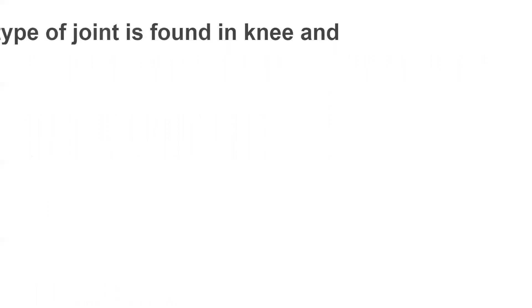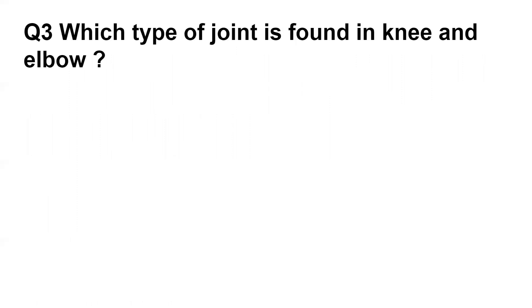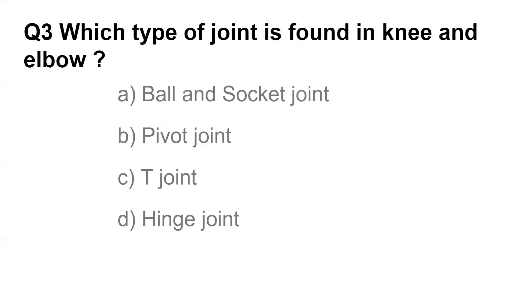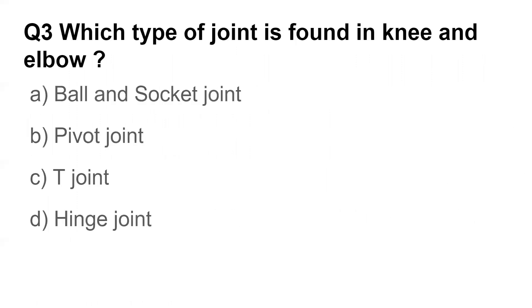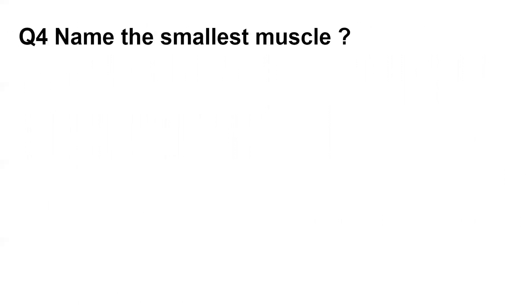Question number three: Which type of joint is found in the knee and elbow? Options are ball and socket joint, pivot joint, T joint, and hinge joint. The answer is hinge joint.